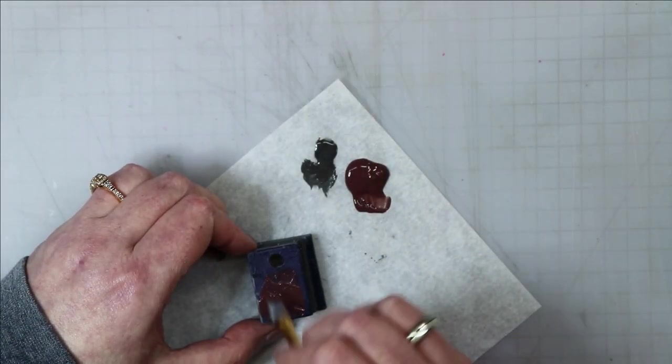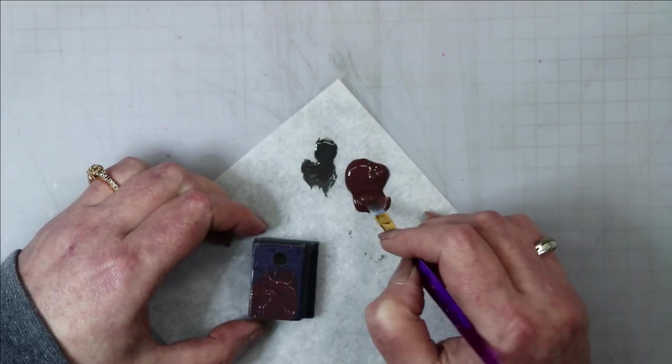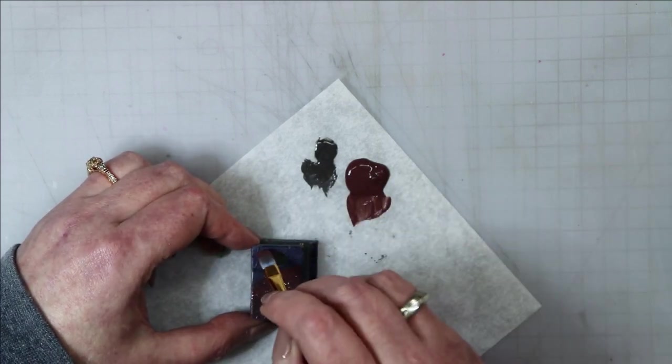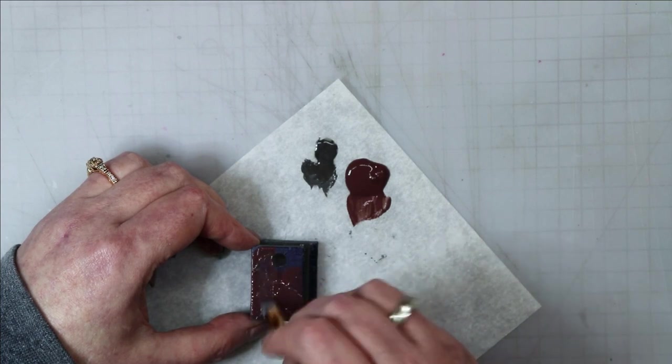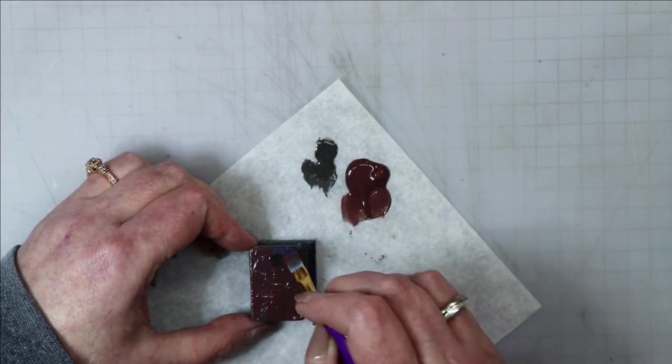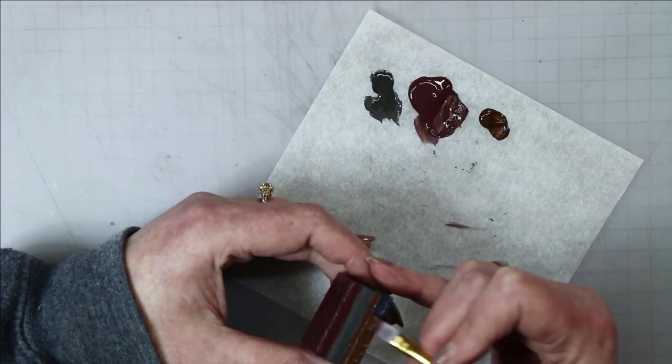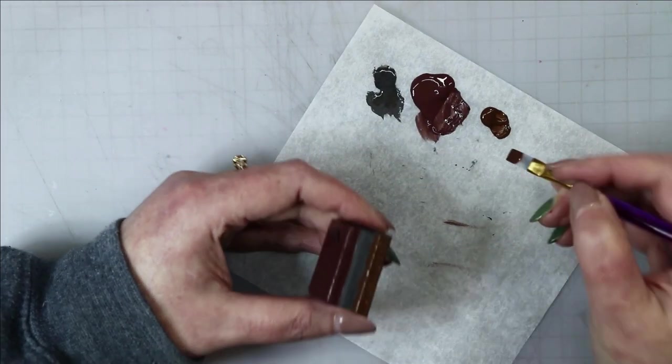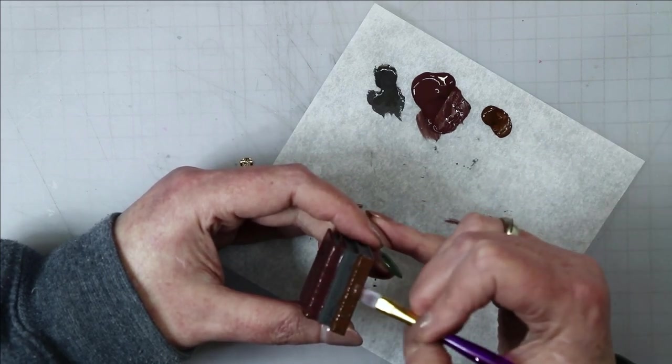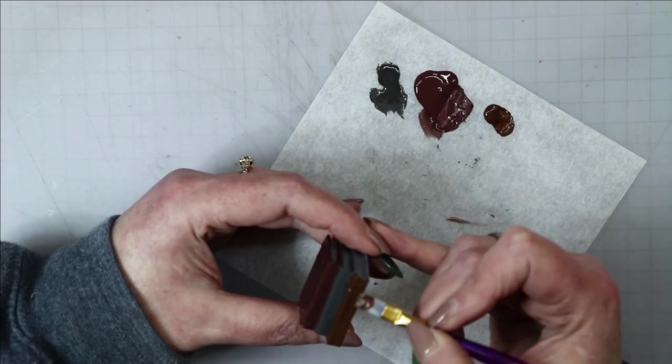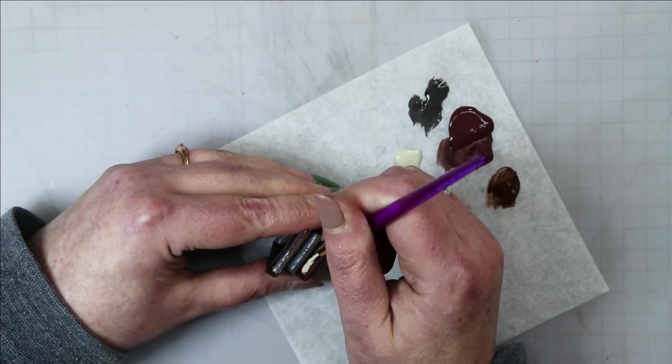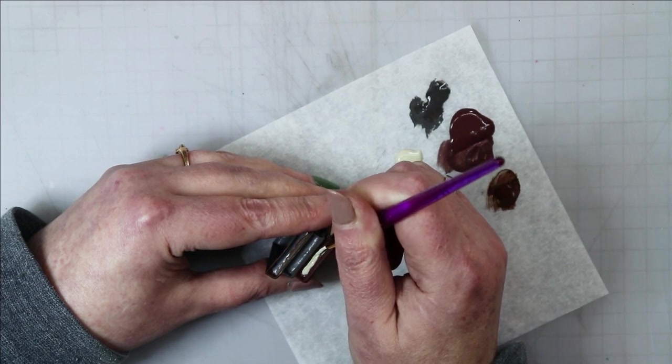After everything had dried it was time to start painting the details onto the books to make them look like they were three separate books instead of a stack of plastic. I painted each spine a different color. I used gray for the middle one and a chocolate brown for the top, which is one of my favorite colors because it has a little bit of red in it so it looks like that rich burgundy leather, and then I used an espresso brown for the bottom book.